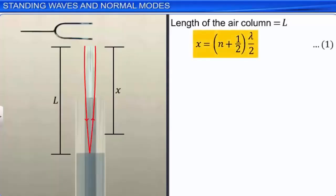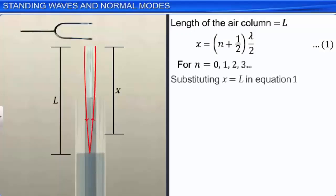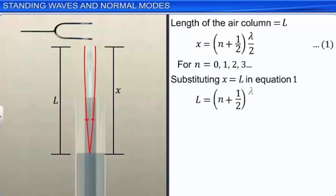Substituting x = L in equation 1, we get L = (n + 1/2)(λ/2), for n = 0, 1, 2, 3, and so on. By rearranging the above equation, we get λ = 2L/(n + 1/2), for n = 0, 1, 2, 3, and so on. Let this be equation 2.